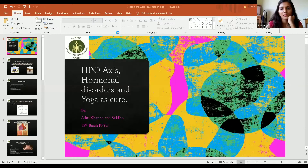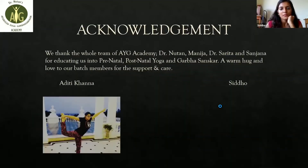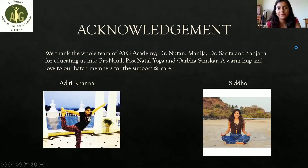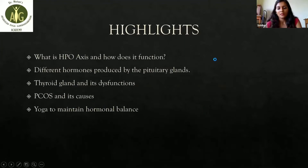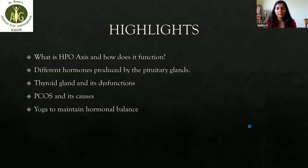HPO access, which has already been explained by Divyani very well — I'll be a little quick with it. Siddho here is going to help me with the PPT by changing the slides. I would like to start by thanking Muth and Ma'am for this wonderful course. The highlights are: what is the HPO axis and how does it function, the different hormones produced by the pituitary glands, what is the thyroid gland and its dysfunction, PCOS and its causes, and how yoga and pranayama can help us maintain a balance of these hormones.